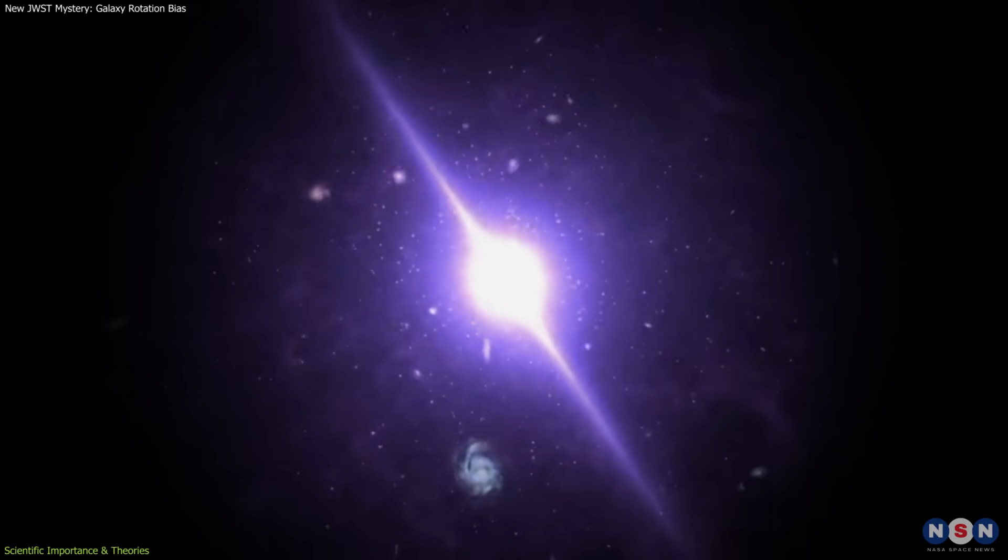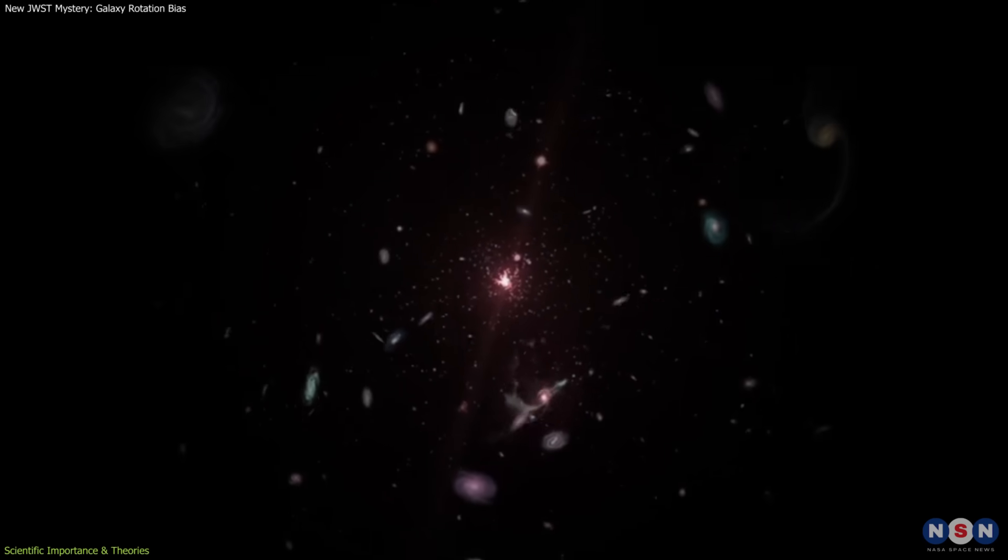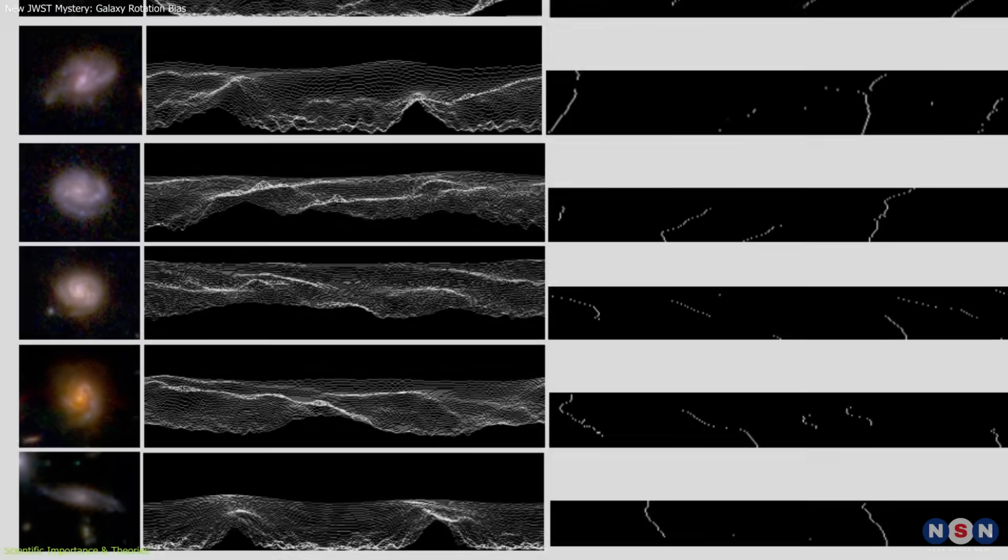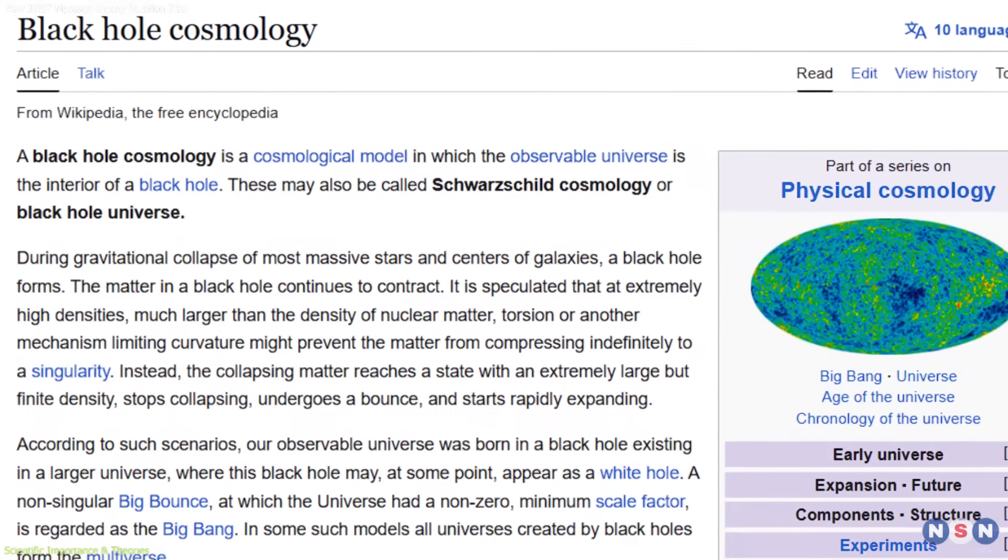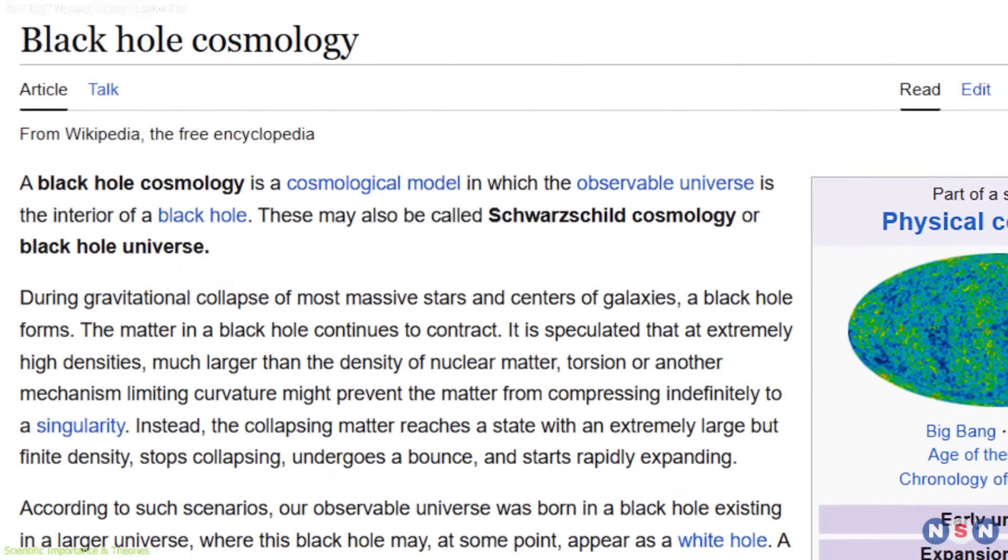One is that the universe itself may have been born rotating. In that case, the early spin could leave behind a detectable pattern in the orientation of galaxies.